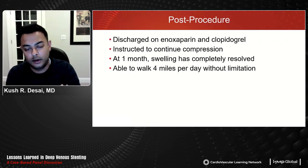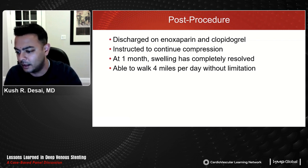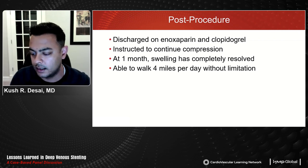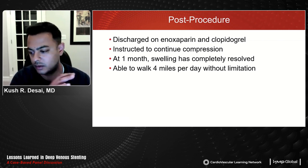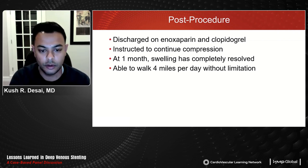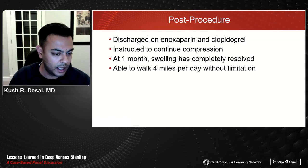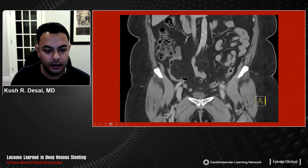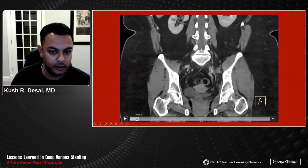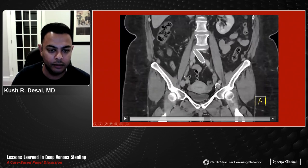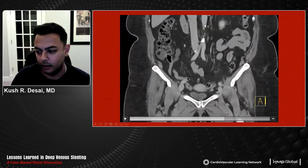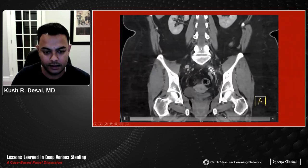The final venogram confirms a satisfactory result. The patient is discharged on apixaban and clopidogrel — antiplatelet therapy for at least 90 days, though data remains limited. The patient is instructed to continue compression. At one-month follow-up, swelling is completely resolved, and the patient is walking four miles per day without limitation. Post-procedure CT shows the stent landed precisely where planned, exactly at the compression site, with nice contrast flowing through it.